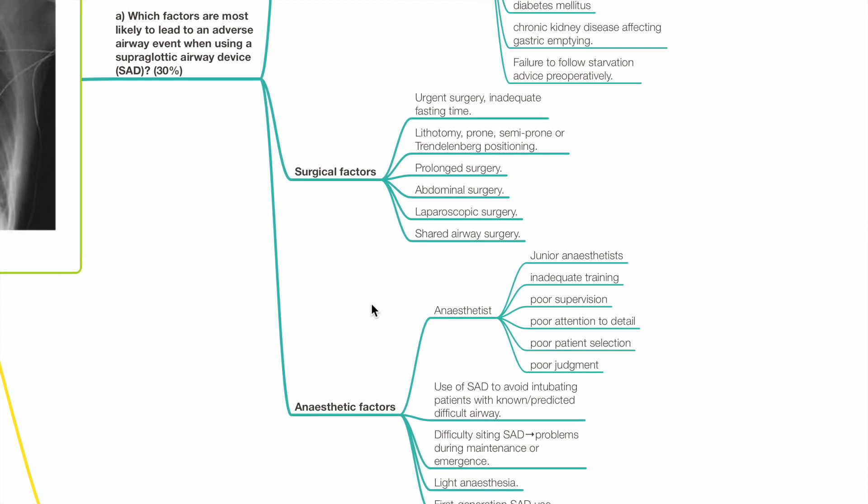Anesthetic factors that increase the risk of adverse airway events during supraglottic airway use include anesthetist being junior, inadequate training, poor supervision, poor attention to detail, poor patient selection, and poor judgment. Use of SAD to avoid intubating patients with known or predicted difficult airway, difficulty siting the supraglottic airway device leading to problems during maintenance or emergence, light anesthesia, and first-generation SAD use.